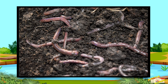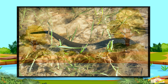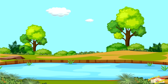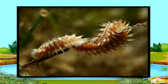Where do annelids or segmented worms live? Oligochaeta, such as earthworms, live in soil. Hirudinea, such as leeches, live in fresh water like lakes and rivers. Polychaeta, such as marine bristle worms, live in salt water like the ocean.